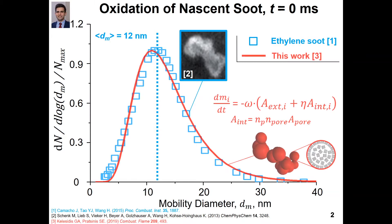We'll use this measured size distribution as an input to our moving sectional model for internal and external surface oxidation of soot, which accounts for the fractal-like morphology of these nanoparticles, as you can see over here. For every section of this size distribution we simulate the evolution of the soot mobility diameter and mass during oxidation taking place at the surface of the soot nanoparticles but also inside their pores.